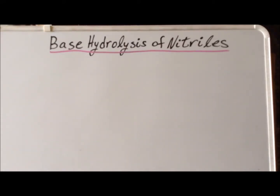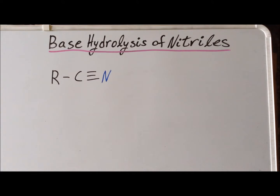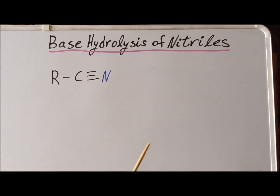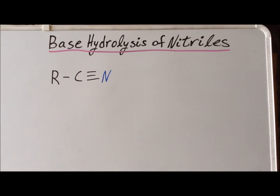In this video, we are going to discuss the base hydrolysis of nitriles — three nitriles in particular. Recall that nitriles are derivatives of carboxylic acids with the general structure R-C≡N, where CN is the cyano or cyanide group, and R is some alkyl group.